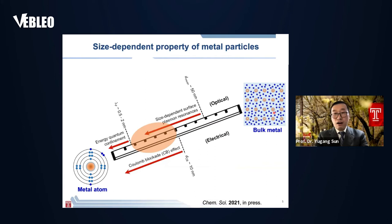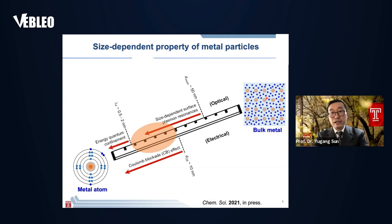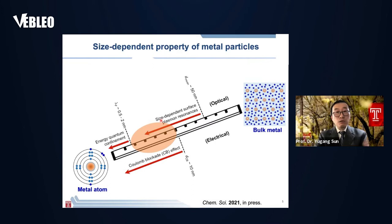When many metal atoms are condensed together to form a bulk object, the density of energy states becomes significant and the valence band electrons become free electrons that can move freely in the metal. When we reduce the size of the metal object down to tens of nanometers — for example, around 50 nanometers, which is comparable to the mean free path of electrons in metal — size-dependent surface plasmon resonance behavior can occur.